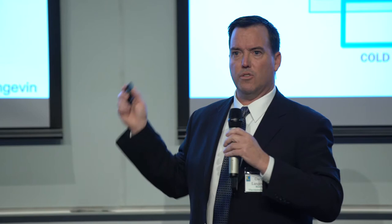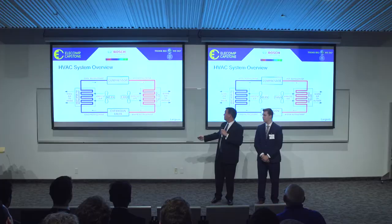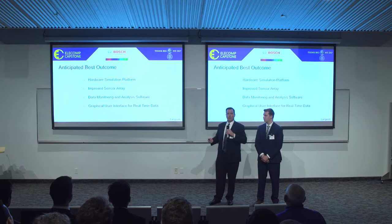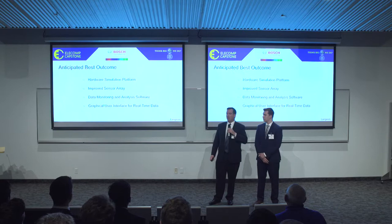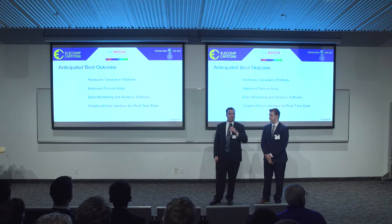This cycle repeats over and over again, and is all controlled from one central thermostat. That central thermostat has seven controls on it, which is the point of our project. The thermostat controls the HVAC unit, and our job is to implement our prototype in between both of these. Our anticipated best outcome is to create a platform for how to do a simulation, improve on the existing sensor array, and develop a program that includes data monitoring and further analysis, as well as a GUI — a graphical user interface — that will display real-time data. And here's Brendan to explain the technical aspects of what we've accomplished.